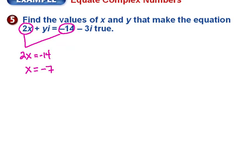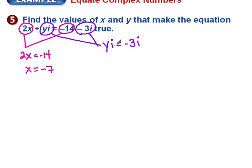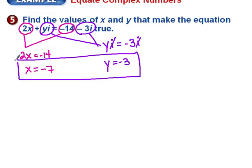Now I'll look at the imaginary component, which is always the second part. Setting those equal gives me yi equals negative 3i. Since I have an i on both sides, I cancel them, giving me y equals negative 3. Plugging back in: 2 times negative 7 is negative 14, and substituting negative 3 for y gives negative 3i, so the two complex numbers match.